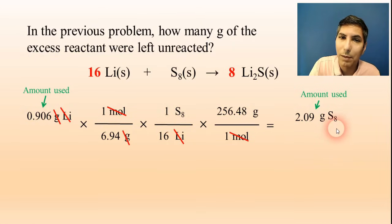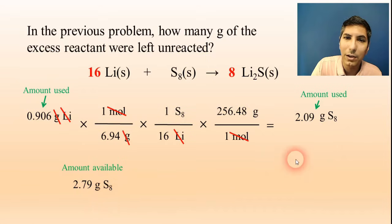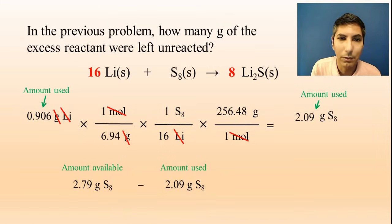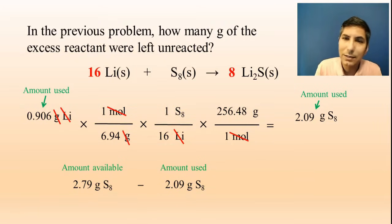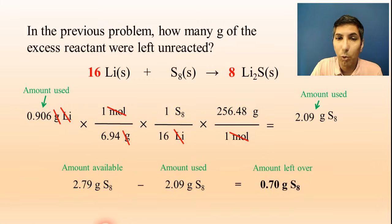In the original problem we had 2.79 grams of sulfur available. If we used 2.09 grams, all we have to do is subtract to find how much is left over — just like if I have 10 apples and eat three, I subtract. Starting amount minus amount used: 2.79 − 2.09 = 0.70 grams of sulfur left over. That's how much of the excess reactant remains.